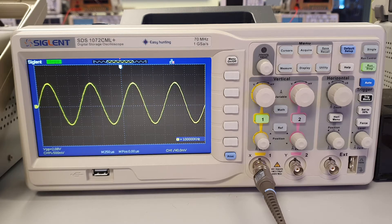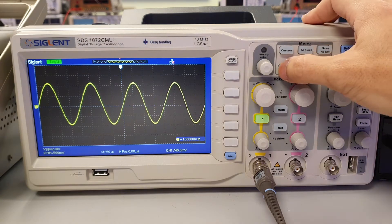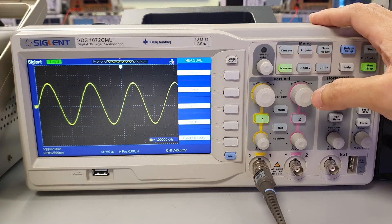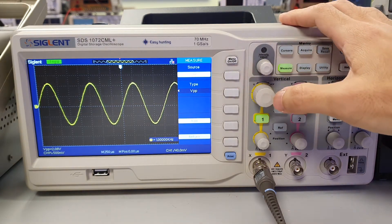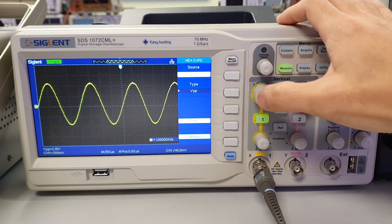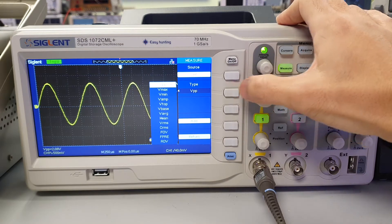To find out the peak-to-peak voltage of the waveform, press the measure button. Then press the button beside voltage. Press the button beside type and select VPP.